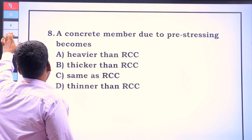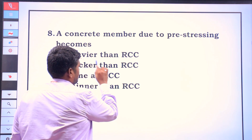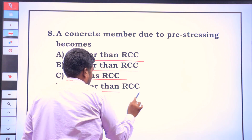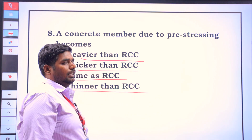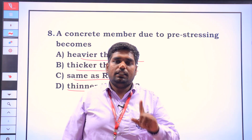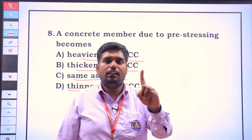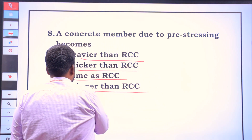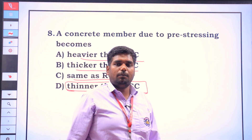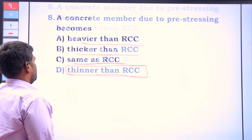A concrete member due to pre-stressing became: heavier than RCC, thicker than RCC, same as RCC, or thinner than RCC. This is a direct question. How do you compare RCC to pre-stressing? The pre-stressing is the best structure. So, the pre-stressed concrete member became thinner than RCC.